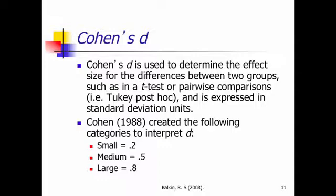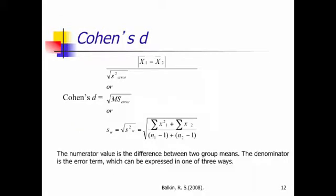So, recall Cohen's D was used to determine the effect size for the differences between two and only two groups, such as in a t-test, or even in pairwise comparisons with a Tukey post hoc. And we interpret a Cohen's D through 0.2, 0.5, and 0.8 for small, medium, and large effect sizes, respectively. And here's the computation that you may have seen. There's a shortcut here where you can just substitute the denominator term with just the square root of the mean square error when you're doing ANOVA. But it is a little less accurate than the longer formula that you see, but it can still be done.